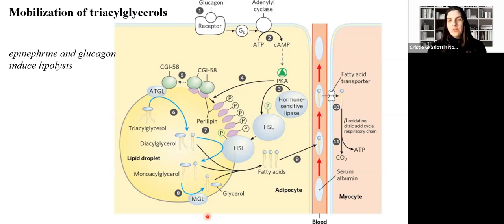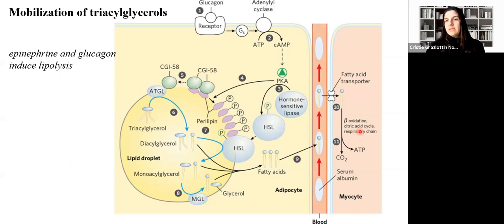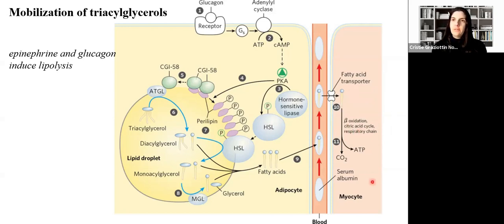Phosphorylated perilipin combines with hormone-sensitive lipase, which acts on diacylglycerol, producing monoacylglycerol. Monoacylglycerol, through the action of monoacylglycerol lipase, releases fatty acids and glycerol. Fatty acids circulate through the blood bound to albumin, and then at the myocyte level, through a transporter, fatty acids can enter the myocyte and be oxidized through beta-oxidation and the citric acid cycle.